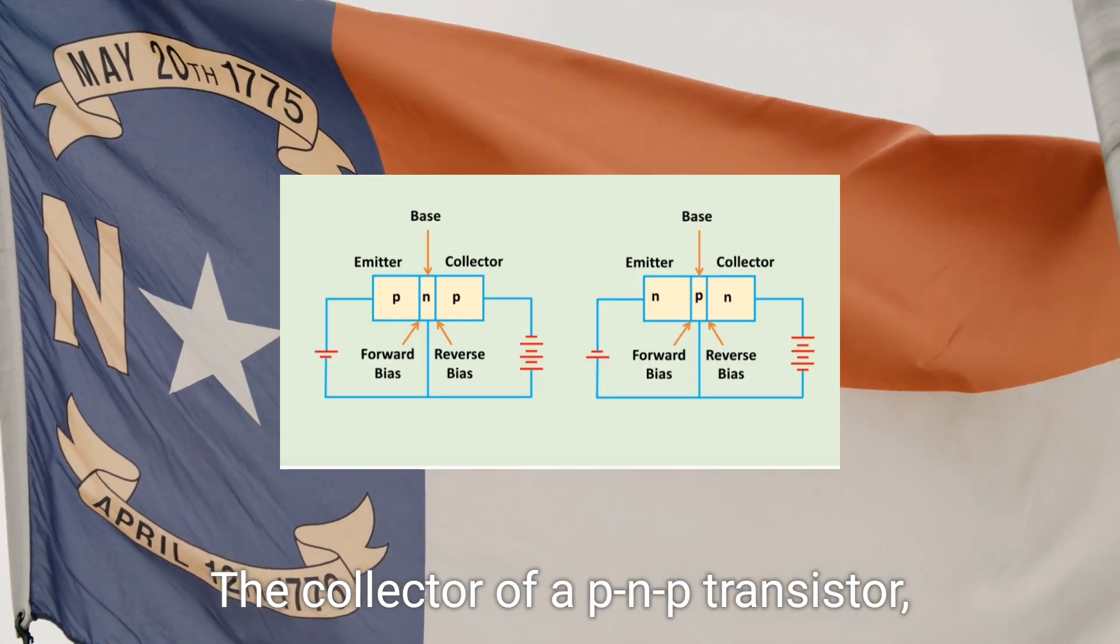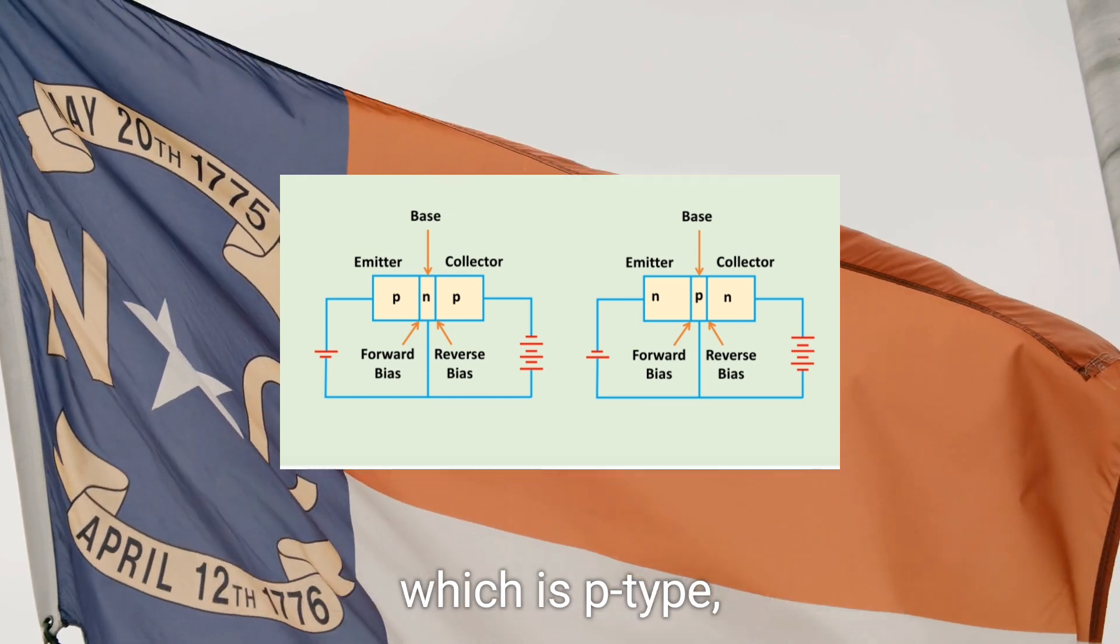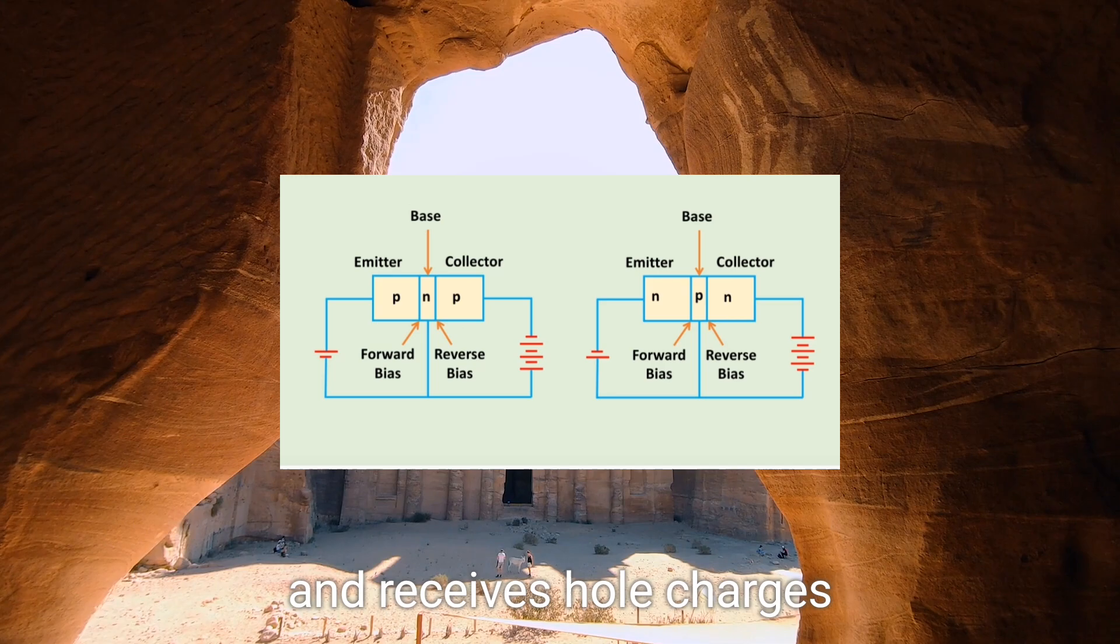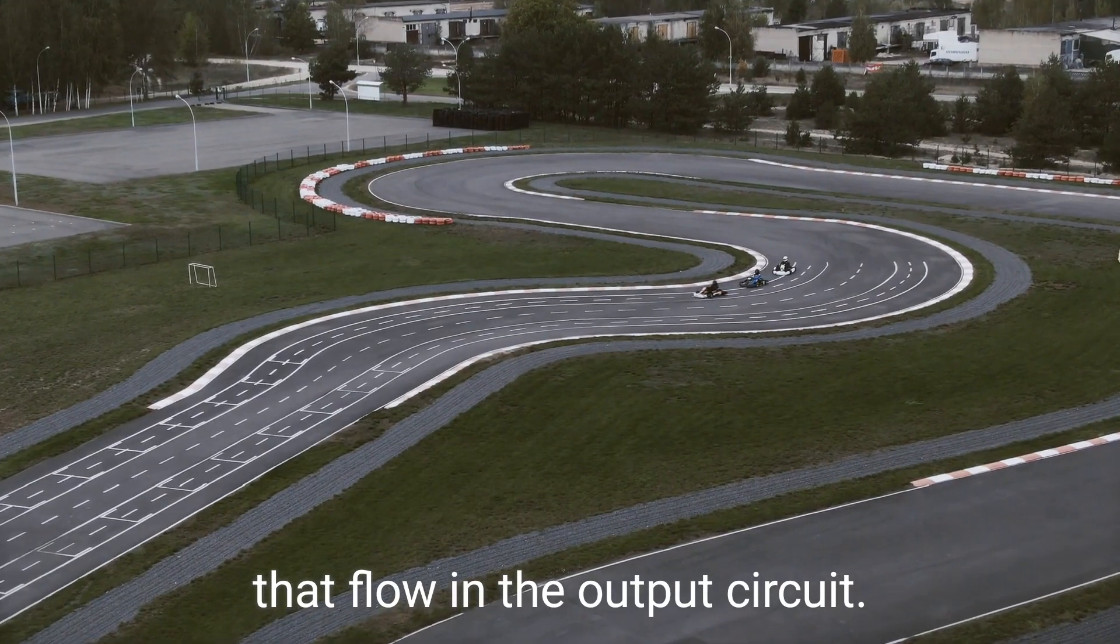The collector of a PNP transistor, which is P-type, is reverse biased and receives hole charges that flow in the output circuit.